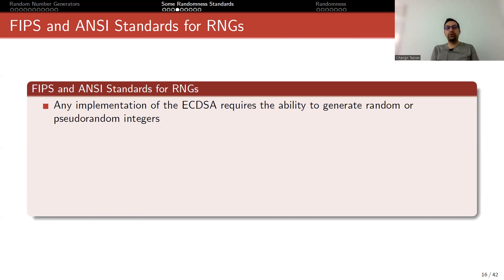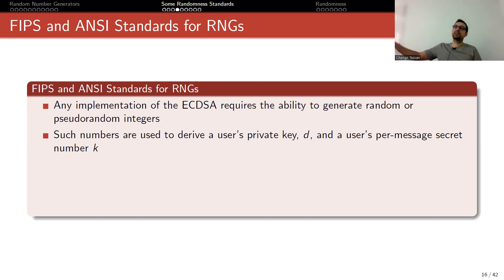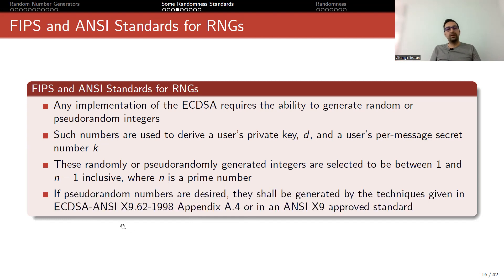Any implementation of the elliptic curve digital signature algorithm requires the ability to generate random or pseudo-random integers. Such numbers are used to derive a user's private key D and a user's per-message secret number K. This K was reused twice in the Bitcoin example I mentioned — if you transfer cryptocurrencies and digitally sign them but use the same random number K twice, your private key leaks. These random integers are selected to be between 1 and N minus 1, where N is a prime number. If pseudo-random numbers are desired, they shall be generated by the techniques given in the relevant standards documents.